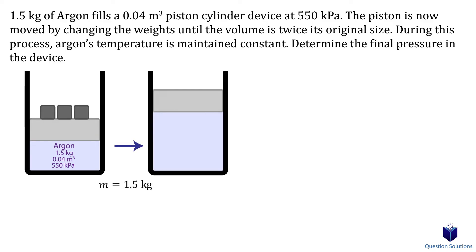We have 1.5 kilograms of argon. The initial volume is 0.04 cubic meters, and the pressure is 555 kilopascals.